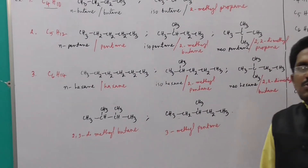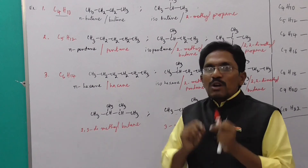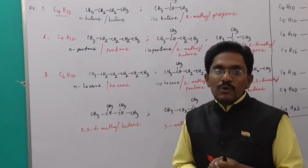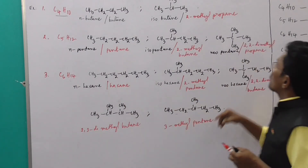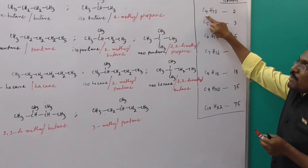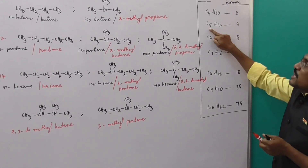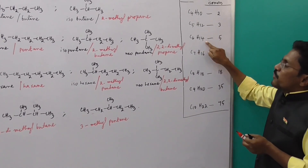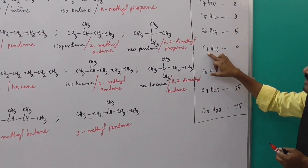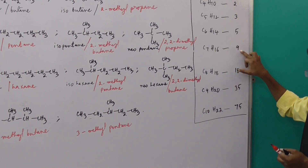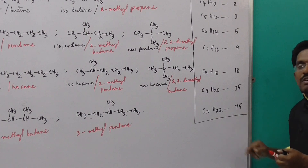In competitive exams a question may ask how many chain isomers are possible for a given number of carbons. For alkanes: C4H10 gives 2 chain isomers; C5H12 gives 3; C6H14 gives 5; C7H16 gives 9; C8H18 gives 18; C9 gives 35; and C10 gives 75 isomers.